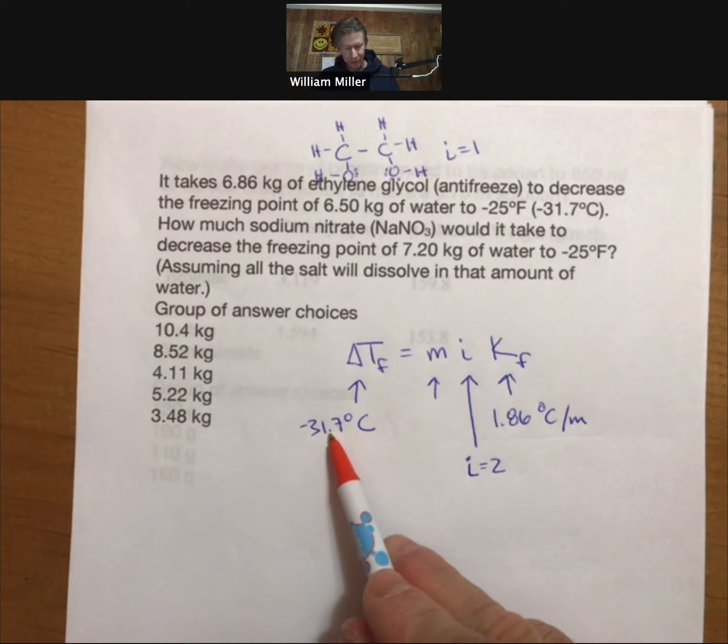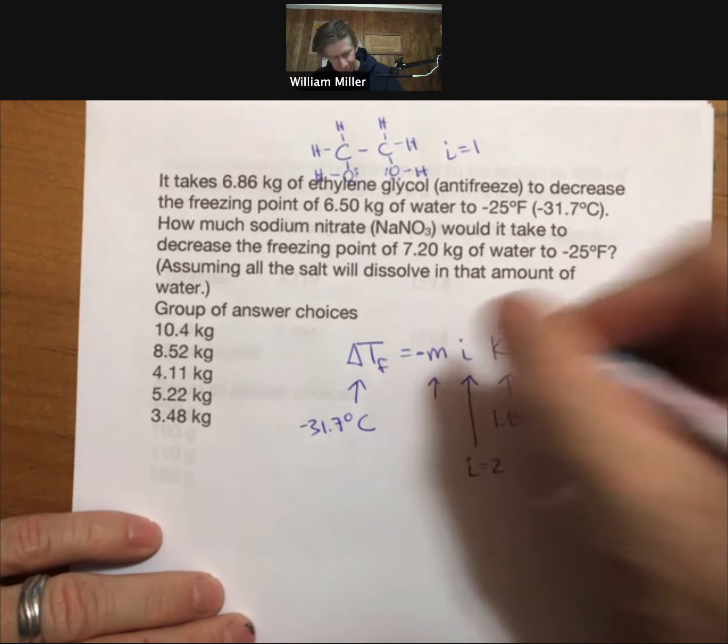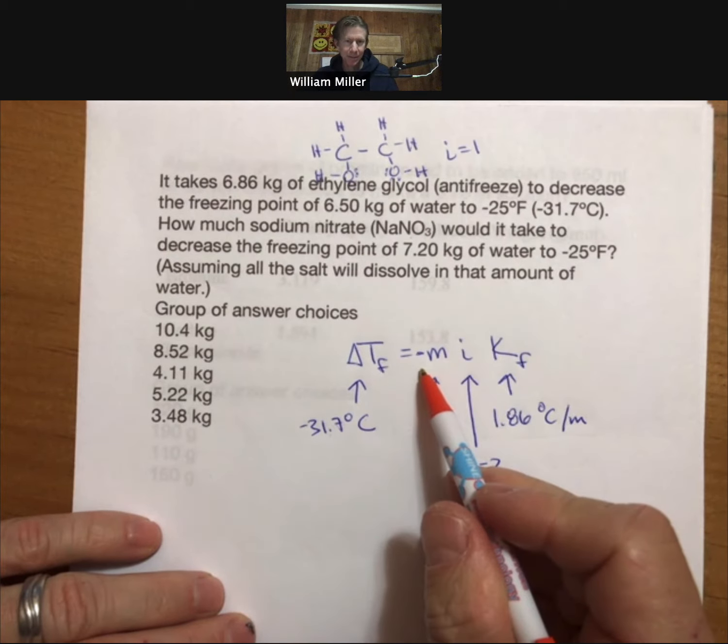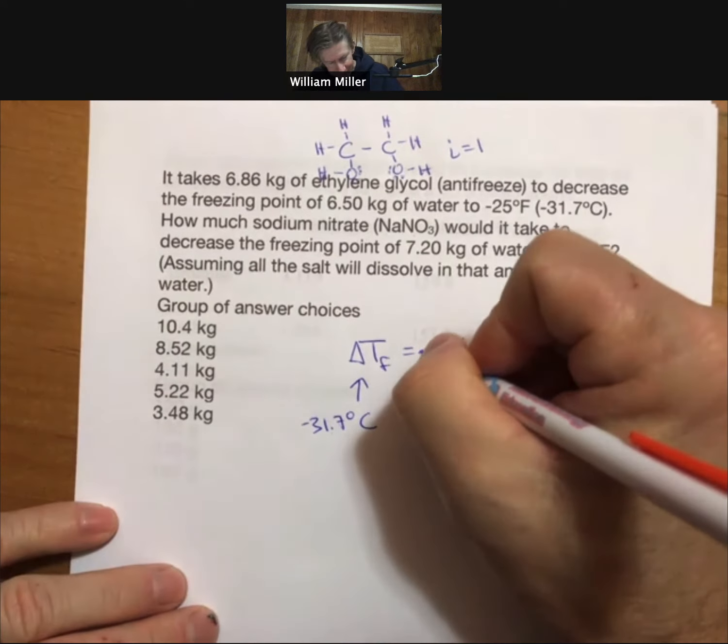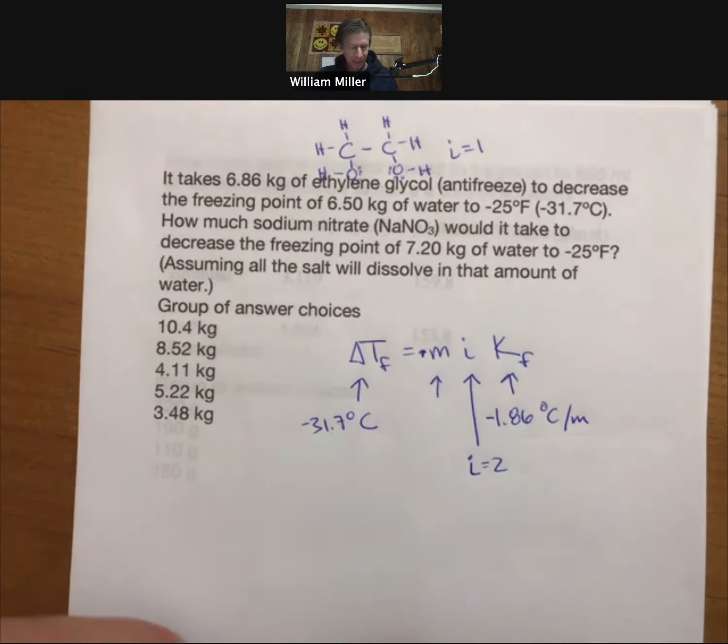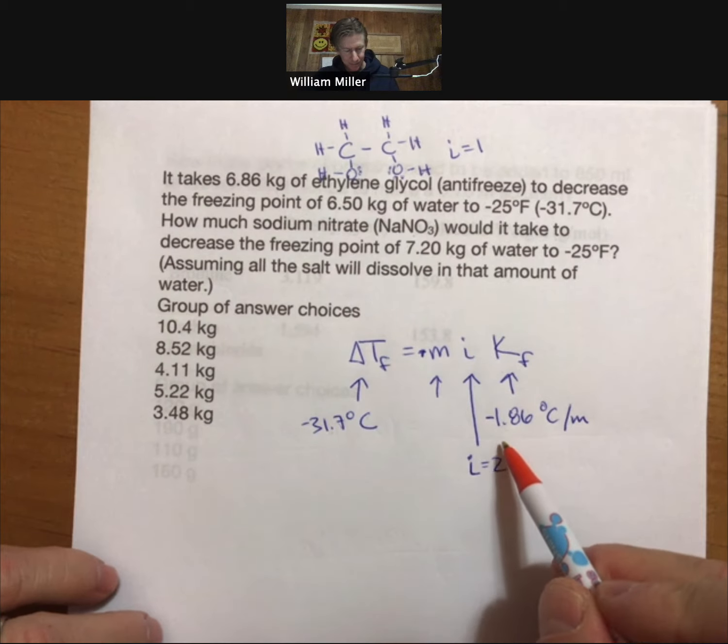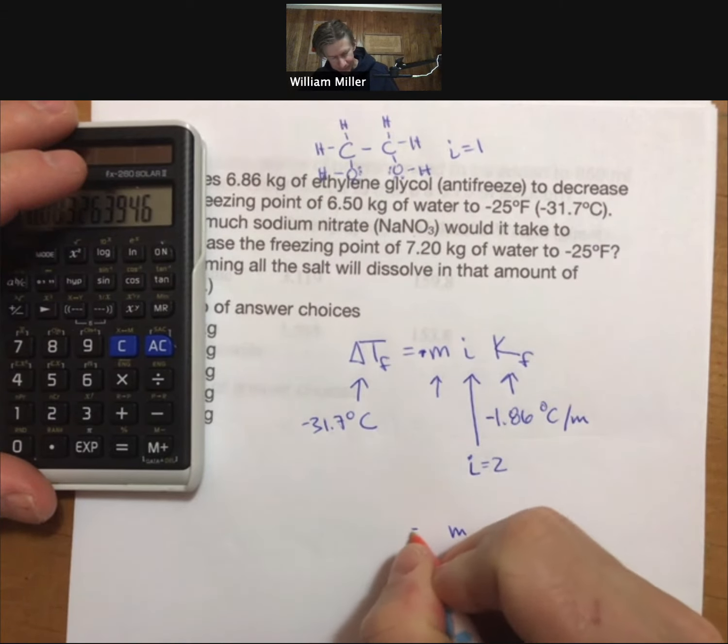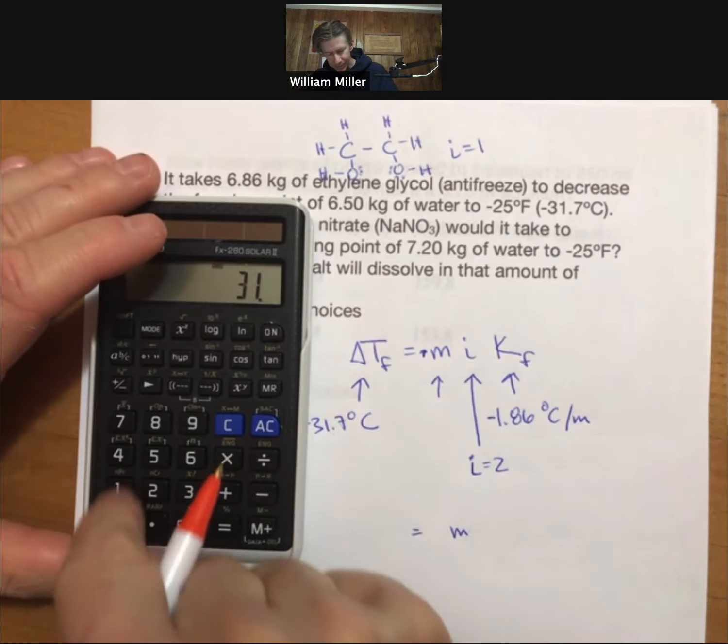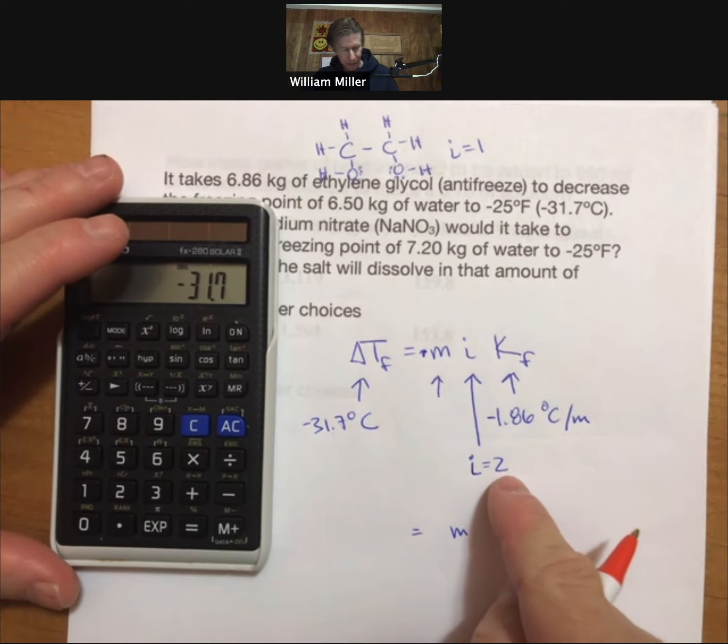So we take 31.7 - and because it's freezing, we add a minus there. Actually, the minus is in the Kf. So it's going to be 31.7 divided by 2, divided by 1.86.